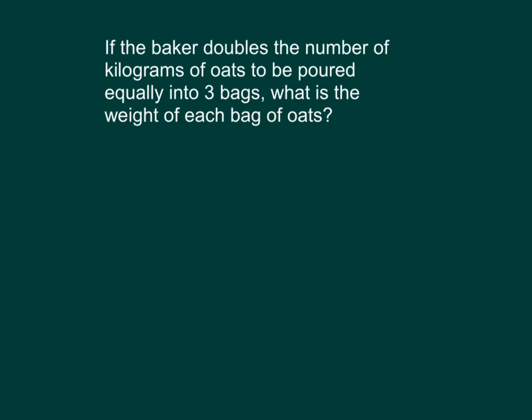If the baker doubles the number of kilograms of oats to be poured equally into 3 bags, what is the weight of each bag of oats? So instead of 4 kilograms of oats, he's now starting with 8 kilograms of oats. So we have 8 divided by 3.